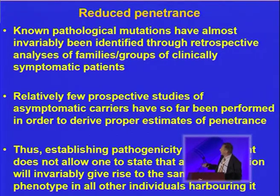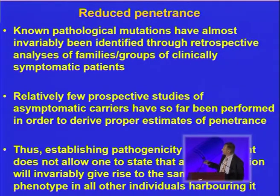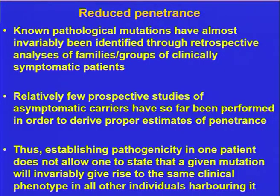One of the problems with studying reduced penetrance in human inherited disease is that for the vast majority of studies carried out to date, the mutations regarded as being of pathological significance have been identified through retrospective studies of families or groups of clinically symptomatic patients. If they're already clinically symptomatic when they come to clinical attention, then a high level of penetrance in the individual and their families may well come with the territory.